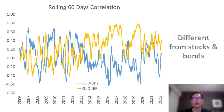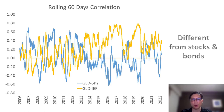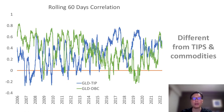Gold is different from the traditional assets of stocks and bonds. This is a chart of the rolling 60-day correlation between gold and both stocks and bonds as represented by their respective ETFs. You can see that the correlation fluctuates between positive and negative territory over time, which means gold moves quite differently compared to stocks and bonds. Gold is also different from other traditional inflation hedges like inflation-protected treasury securities and commodities. Although gold tends to spend more time moving in the same direction as these other inflation hedges, the positive correlation is actually not high most of the time. This makes gold a unique asset on its own, even within the commodities class.